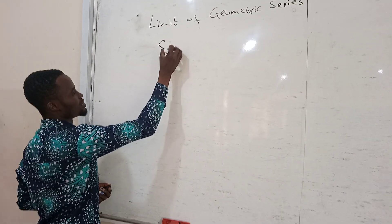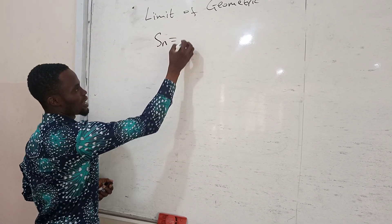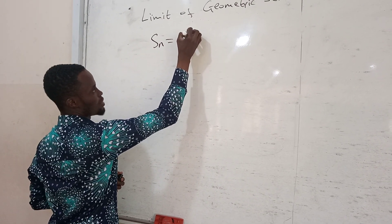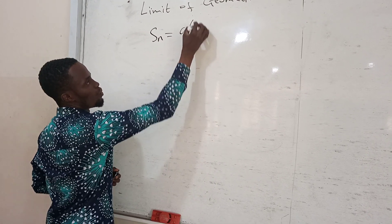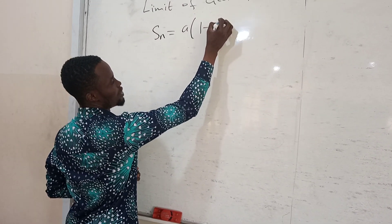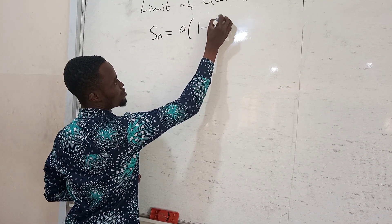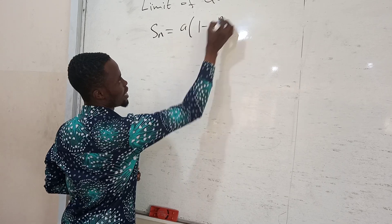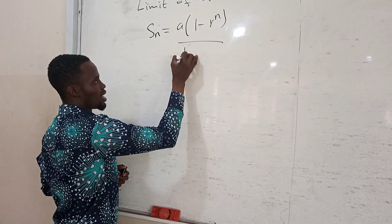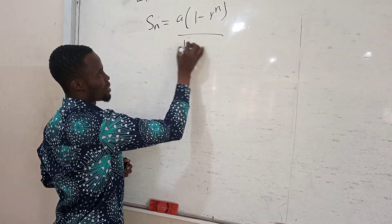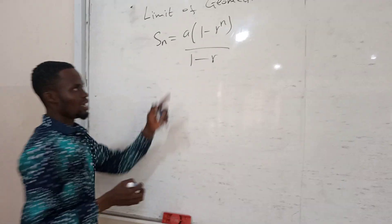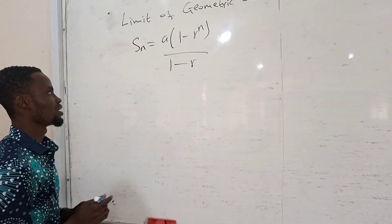The sum of the series formula is equal to the first term times 1 minus the ratio raised to the power n, all divided by 1 minus the ratio. Here n is a natural number.